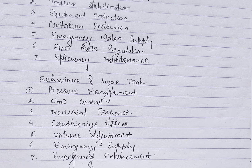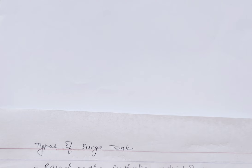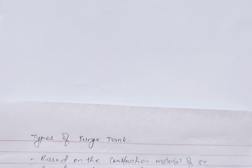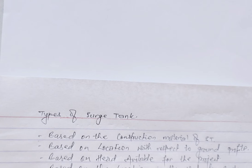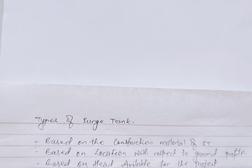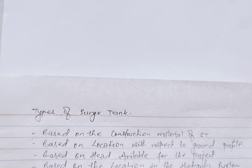Now let's talk about the types of source tanks. Source tanks are classified based on conditions and availability of construction materials. Based on construction material, they can be either concrete or steel structures. Based on location with respect to ground profile, source tanks can be underground, overground, excavated, or free-standing. Based on head available for the project, they are classified as high head, medium head, or low head plants.